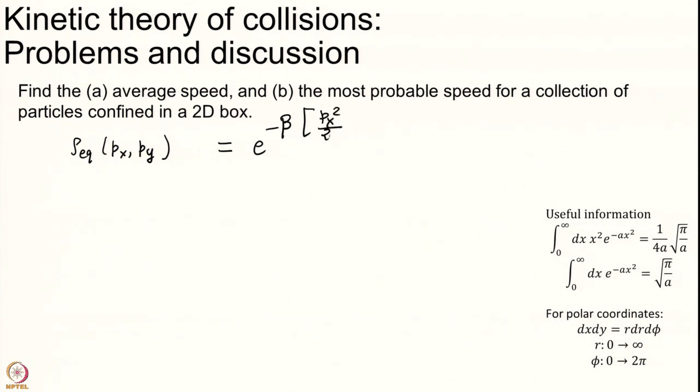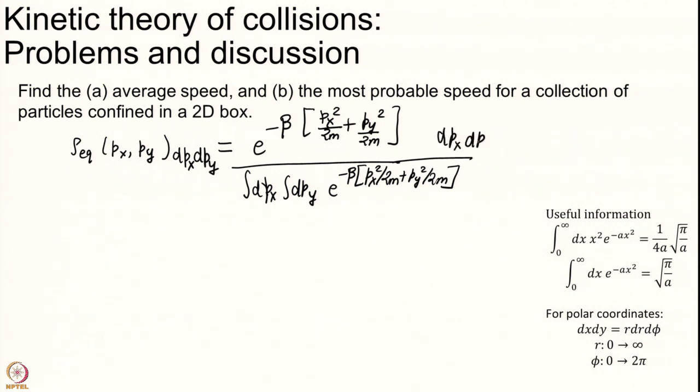What is our basics? Well our basics is the Boltzmann distribution that will be always be true. I have only 2D so I am writing only px and py minus beta h and the h here is only px square over 2m plus py square over 2m and never forget your partition function.